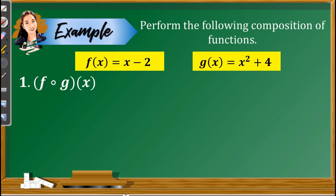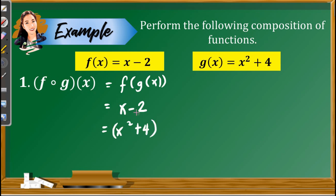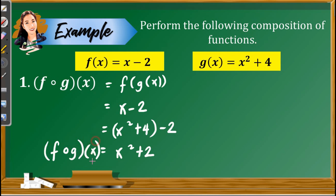Let us now have some examples to easily understand the concept. Perform the following composition of functions. We have f(x) = x minus 2, and g(x) = x squared plus 4. The first item is f∘g(x), which can be written as f(g(x)). Here, g(x) is the input in f. Since f is the function where we replace x with g(x), we write x minus 2, then replace x with x squared plus 4, and simply copy minus 2. Combining similar terms, we get x squared plus 2. So f∘g(x) is equivalent to x squared plus 2.